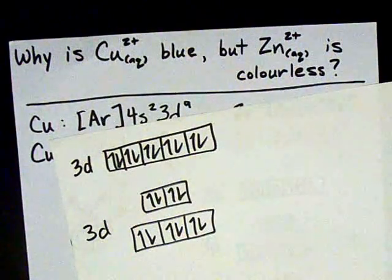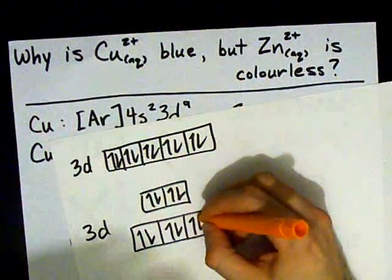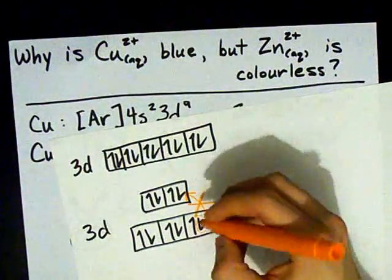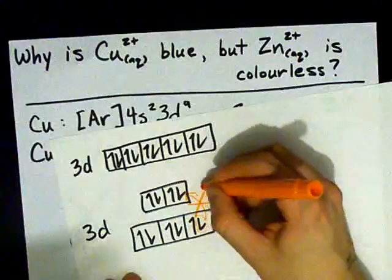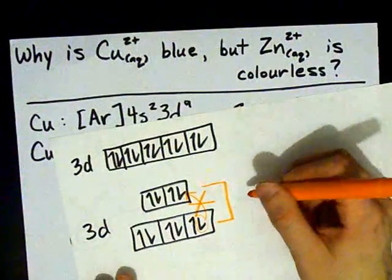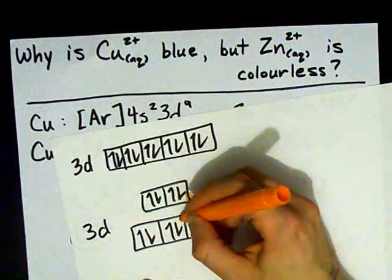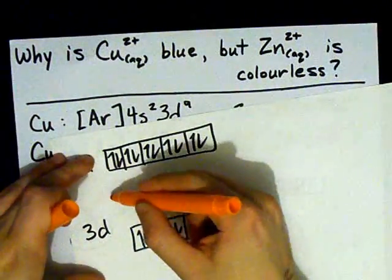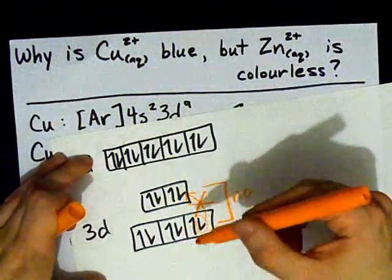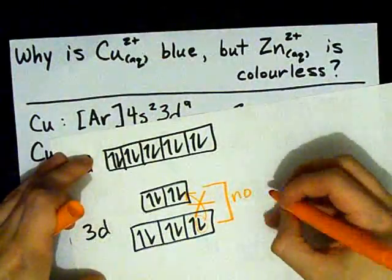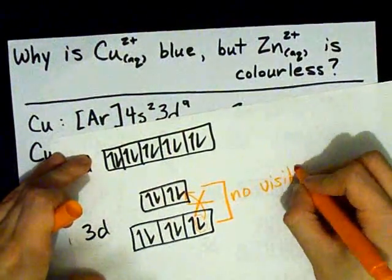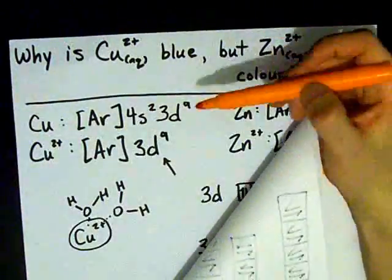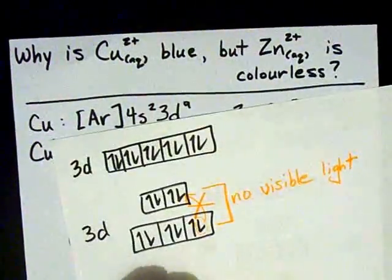Huh. There's nowhere for electrons of lower energies to jump to here. If the electrons can't be excited to that higher energy level, they certainly can't jump back down and give off light in the process. Because this is a perfectly full 3D subshell, no visible light is going to be seen even when ligands like water attach themselves to the zinc.